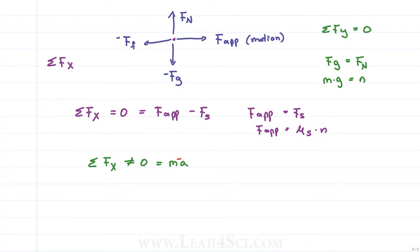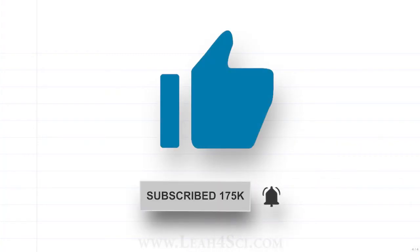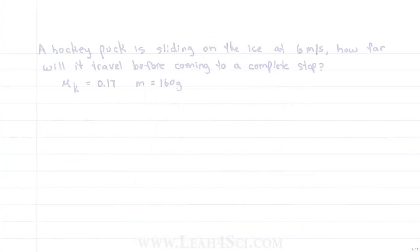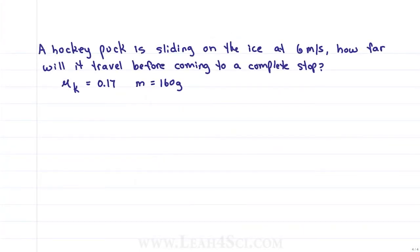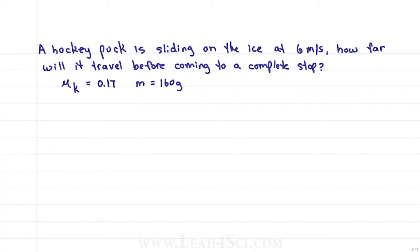Ready to try a practice problem? A hockey puck is sliding on ice at 6 meters per second — how far will it travel before coming to a complete stop? Given: mu sub k equals 0.17 and mass of the puck equals 160 grams. Before starting, identify what we're looking for: how far it travels means we need delta x, and coming to a complete stop means v final equals zero, with v initial equals 6 meters per second.